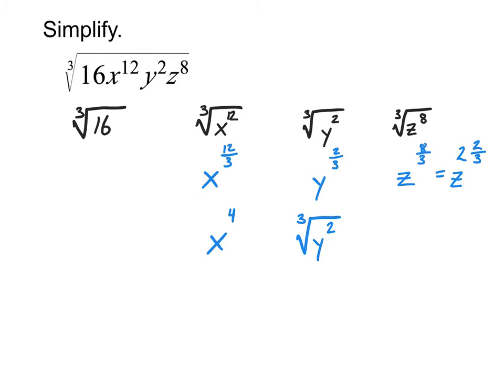Which means then that since the z goes in two whole times, I have a z squared outside of my radical. Inside my radical is where we get the two thirds coming into it, and so it's got to be a z squared on the inside as well.